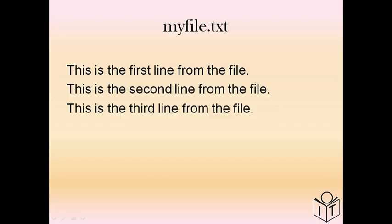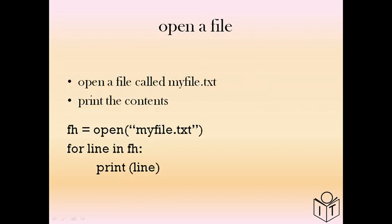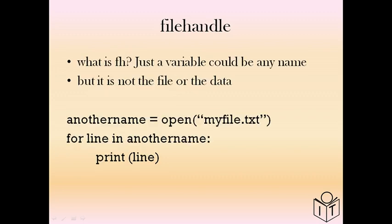We start with a simple text file called myfile.txt. We want to open this file and print the contents, so we use the term open, we have the file name in quotes, and then we use a for loop to print each line of text. We use the variable fh.